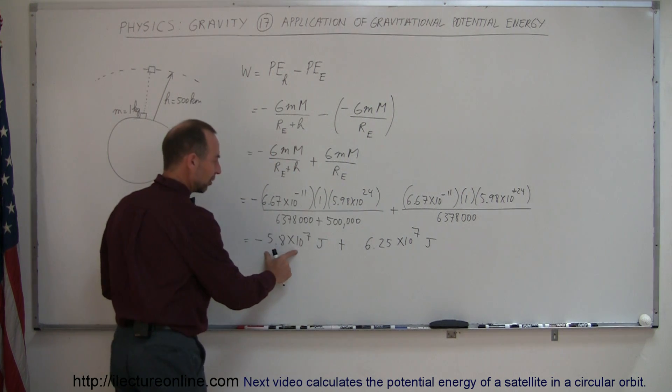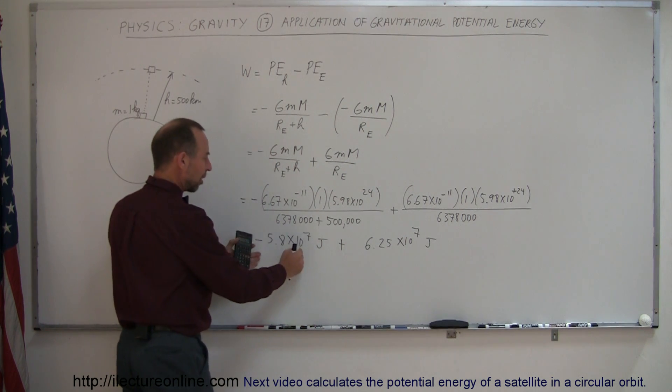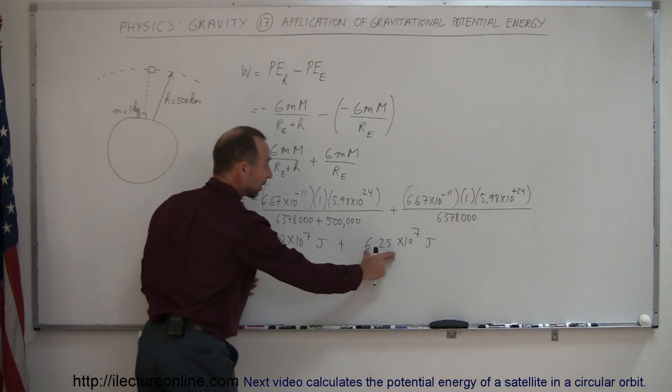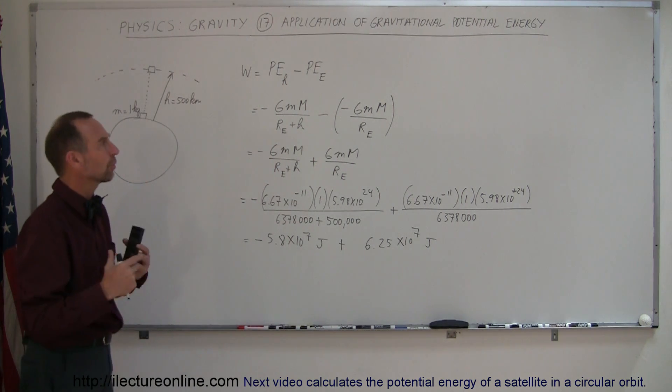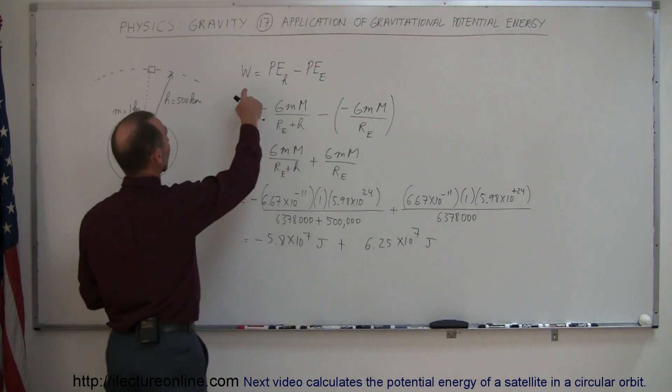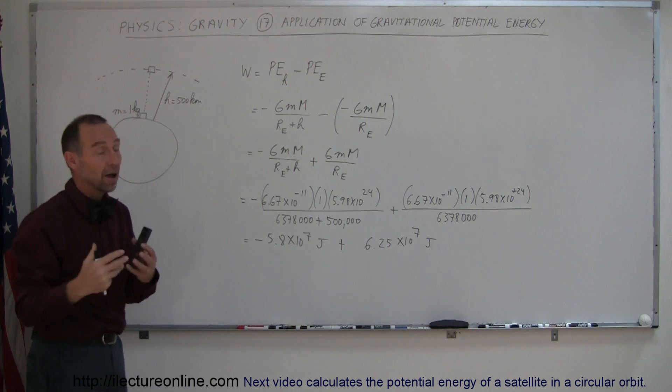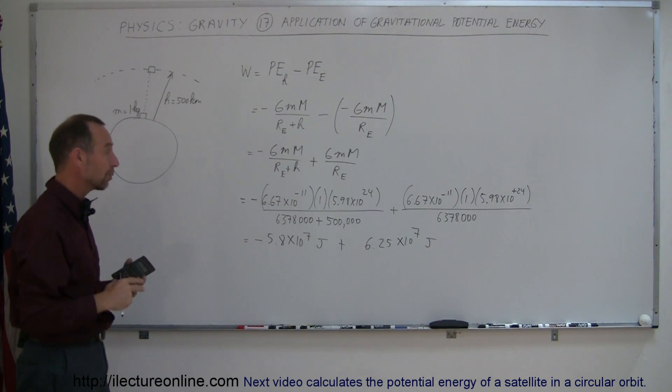So now notice that this number here, the absolute value of this number is smaller than the absolute value of that, so the negative number is smaller than the positive number, so we end up with a positive result. Does that make sense? Sure enough, it's the work required to bring something from here to there, and that should have to be positive work, so it looks like, at least sign-wise, we're okay.